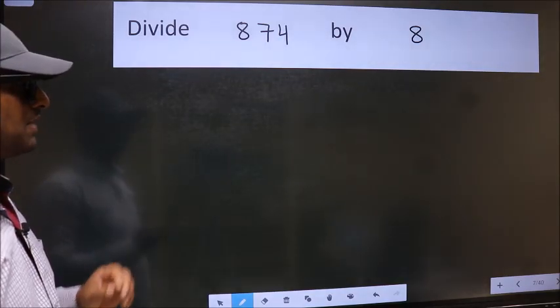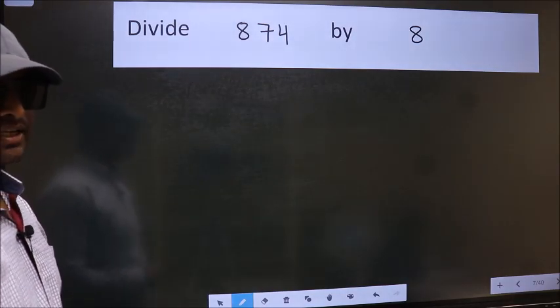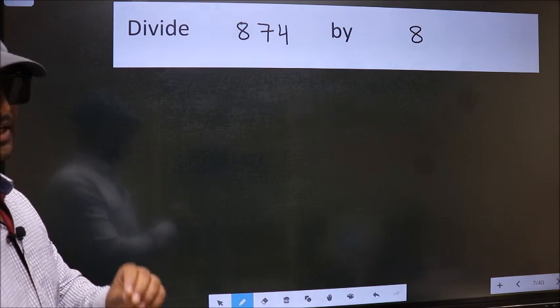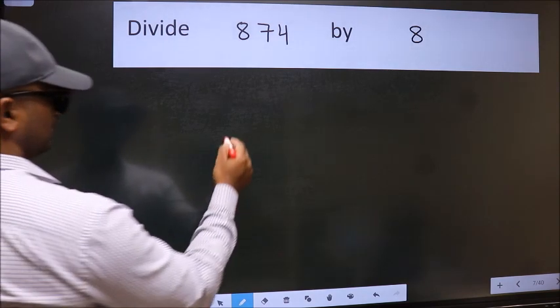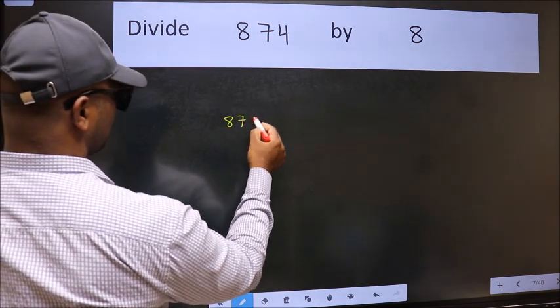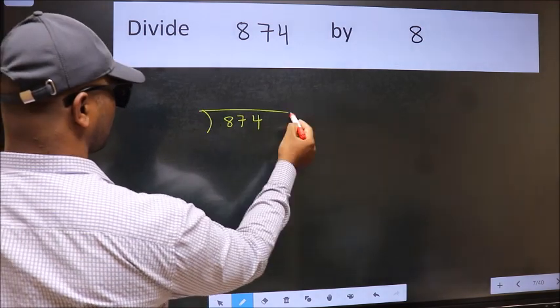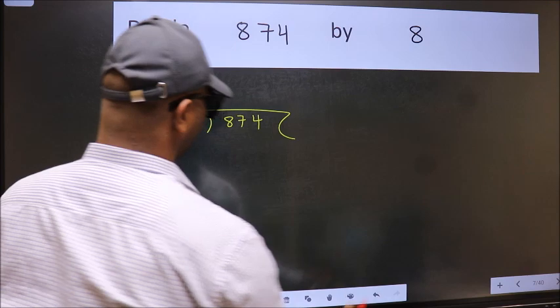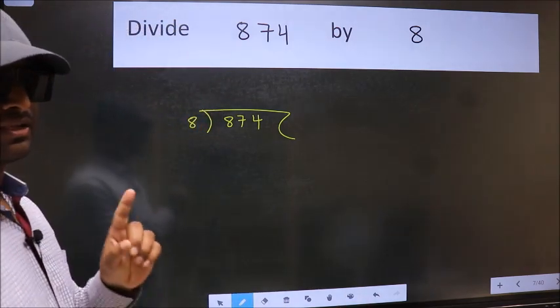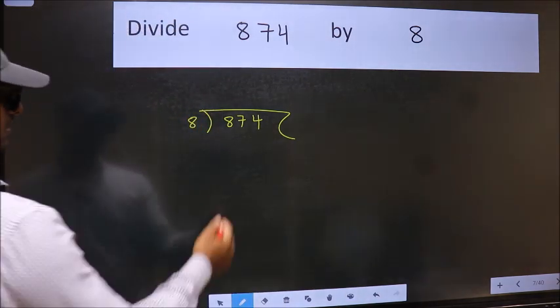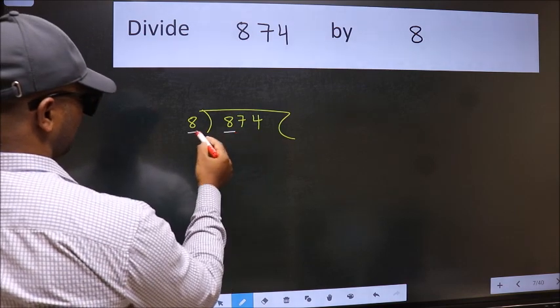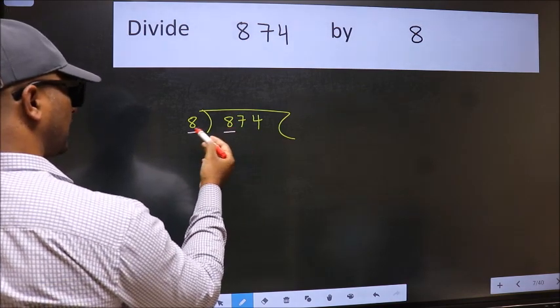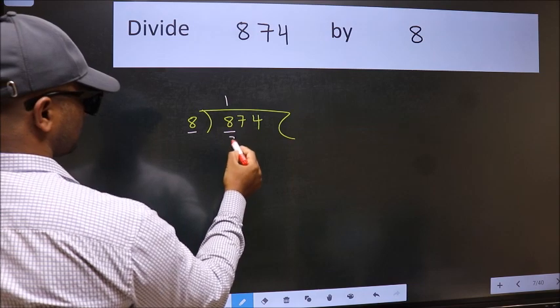Divide 874 by 8. To do this division, we should frame it in this way: 874 here and 8 here. This is your step 1. Next, here we have 8 and here 8. When do we get 8 in the 8 table? 8 once 8.